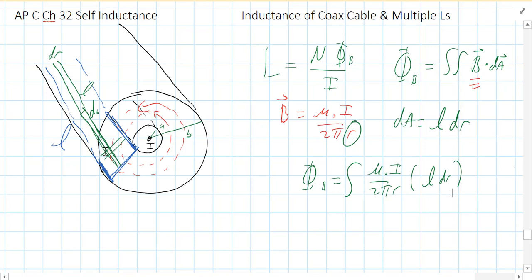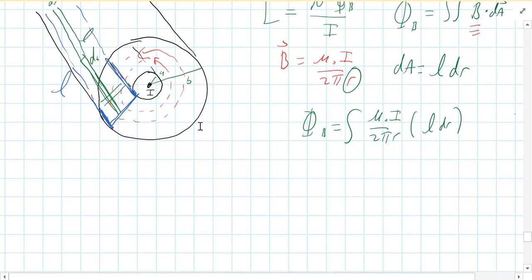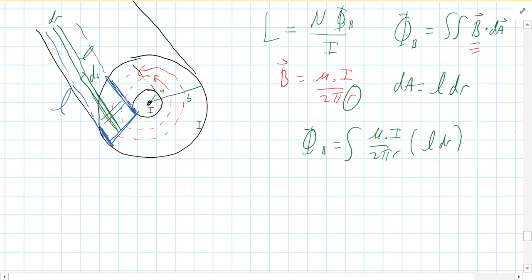It's just along r that it varies. So B is mu naught I over 2 pi r and dA is L dR. And we don't have to worry about the dot product because the magnetic field is always perpendicular to this area or parallel to the area vector at all points along that rectangle. So we picked an area that we don't have to worry about a dot product. We don't have to worry about an angle. And we're integrating r from A to B.